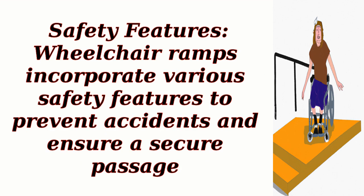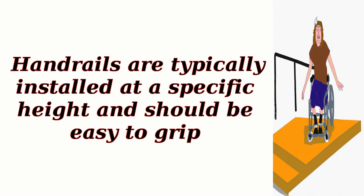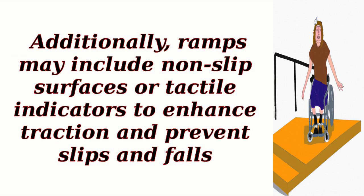Safety Features: Wheelchair ramps incorporate various safety features to prevent accidents and ensure a secure passage. These features include handrails on both sides of the ramp, which provide stability and support for individuals with mobility impairments. Handrails are typically installed at a specific height and should be easy to grip. Additionally, ramps may include non-slip surfaces or tactile indicators to enhance traction and prevent slips and falls.